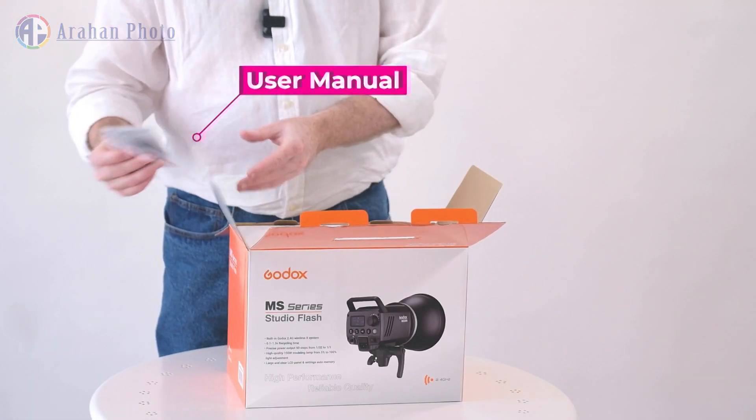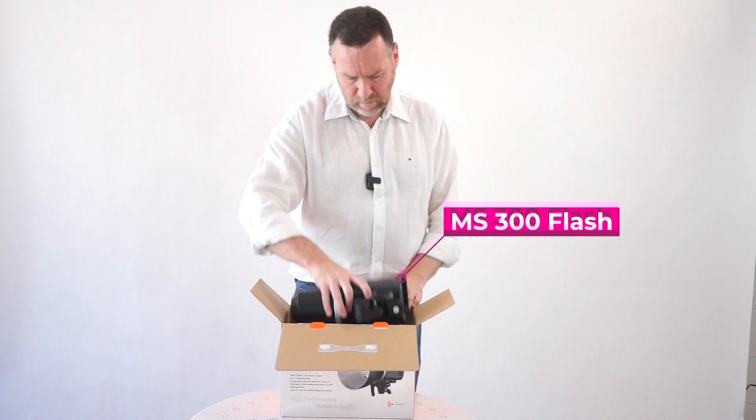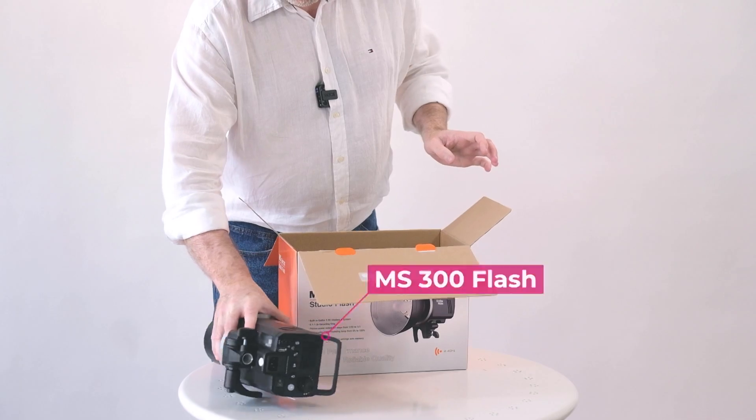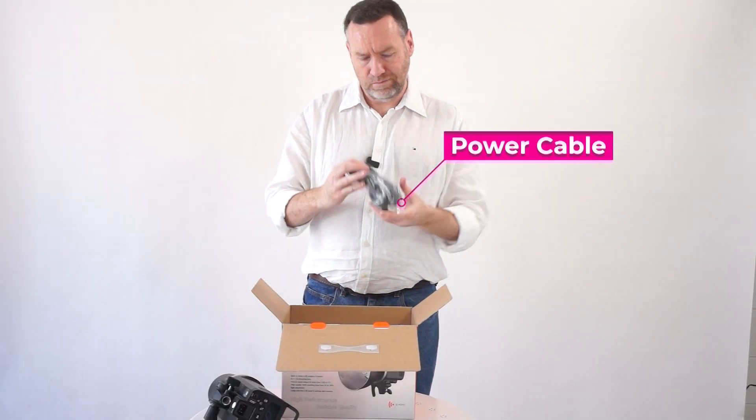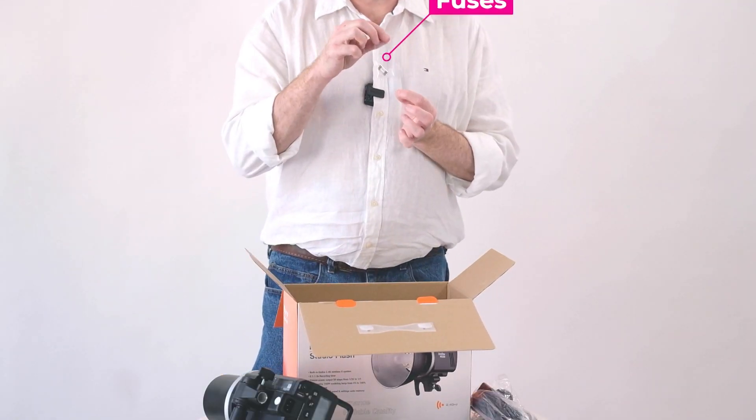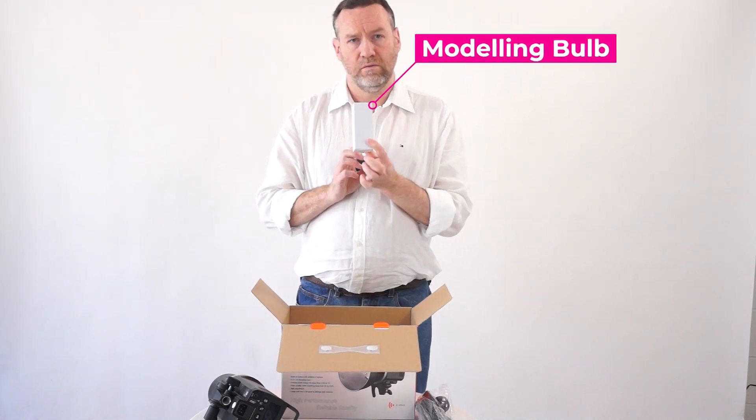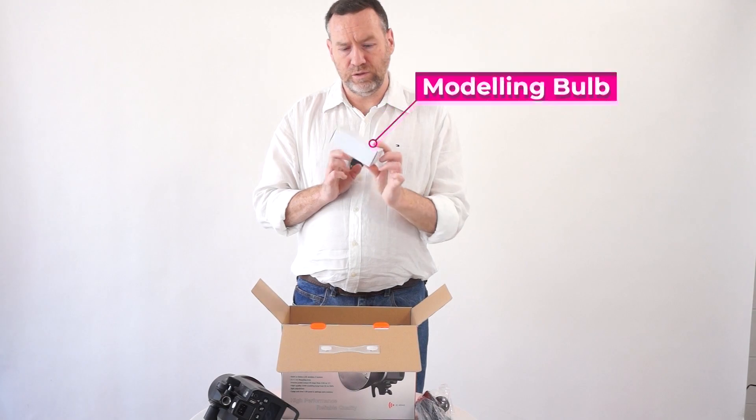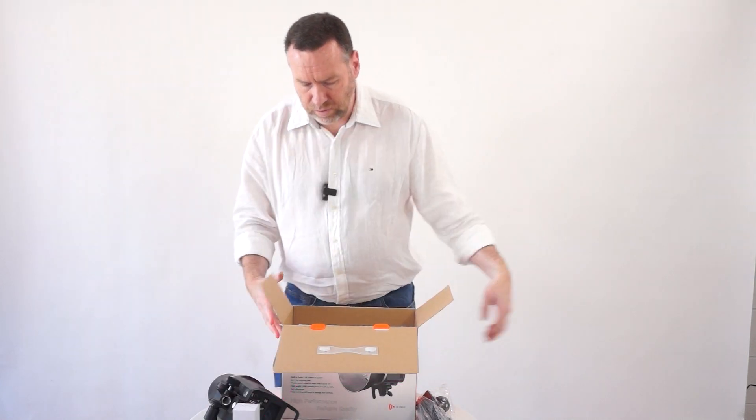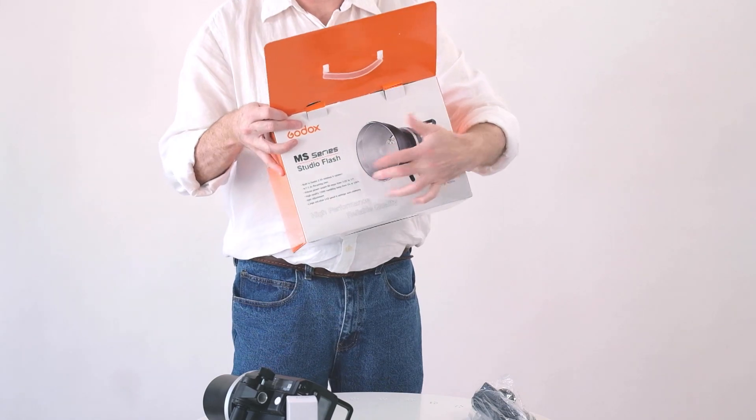We have the usual paperwork and small manual. In here we have the MS300 itself, an Australian power cable, a couple of fuses, and we have a bulb for the modeling light. The flash bulb itself is already in the unit. You'll note on the box there's a reflector on the front of the flash, but there isn't actually one in the box.